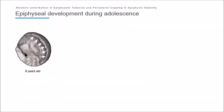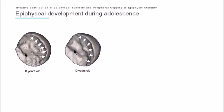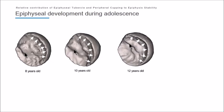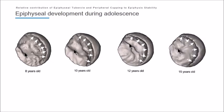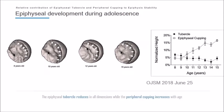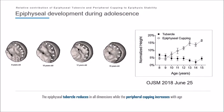What we found is that early on, around age eight, the tubercle is quite large relatively speaking, and the cupping is small. As the hip matures, the cupping phenomenon becomes larger and the tubercle becomes relatively smaller. To summarize, early on in life the relative size of the tubercle is large compared to the cupping, and then that relationship changes over time.